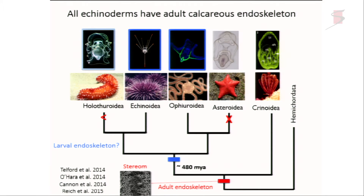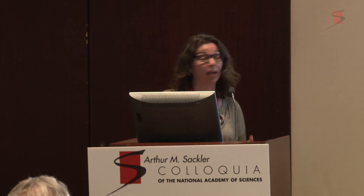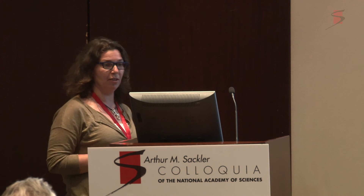We can imagine two evolutionary scenarios: one where the larval skeleton evolved in a common ancestor and was secondarily reduced in all the asteroids — which would be possible since they don't even have an adult skeleton — and then lost in starfish; or it might have independently evolved in the two classes. This gives us a good character set that keeps changing across different classes, making it very interesting for understanding how networks can evolve.